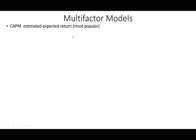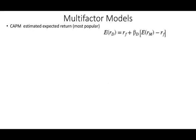CAPM estimates the expected return on a security, and it's the most popular way by looking at beta. Basically what we do is take the risk premium of the security scaled by a beta. So if your beta is one, you take the risk premium times one — beta of one is the same as the market. Or your beta could be 1.5. So if the risk premium is 10, you take 10 times 1.5 and add the risk-free rate to get your expected return. Simply put, we are using only one factor, and the risk-free rate is the intercept.